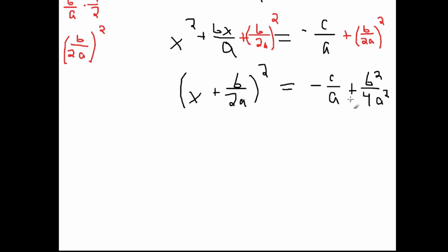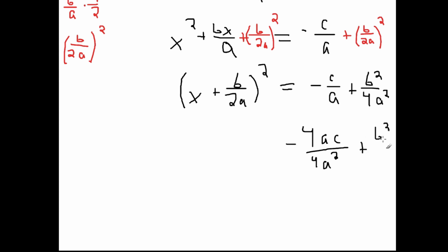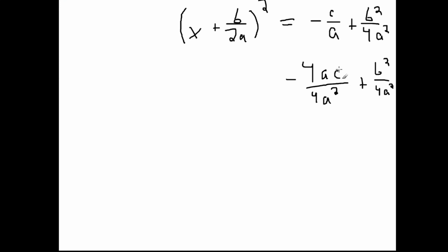To add fractions, we have to have the same denominator. To make the first term have the denominator 4a squared, we multiply the top and bottom by 4a. So the top becomes negative 4ac and the bottom becomes 4a squared. Then we add that to b squared over 4a squared, giving us b squared minus 4ac all over 4a squared.